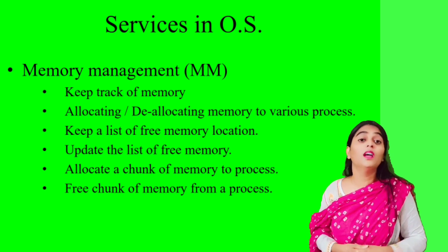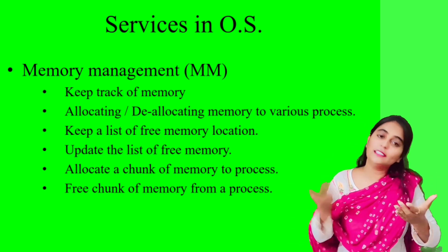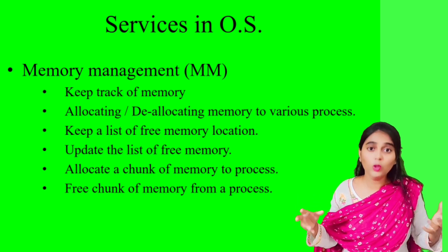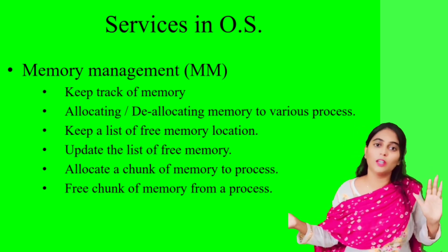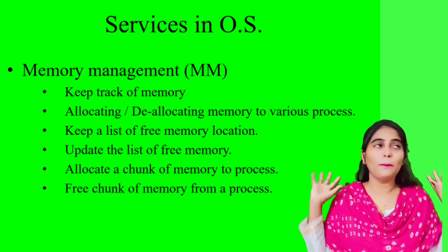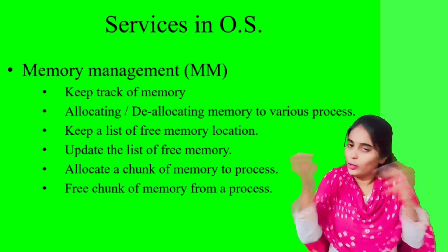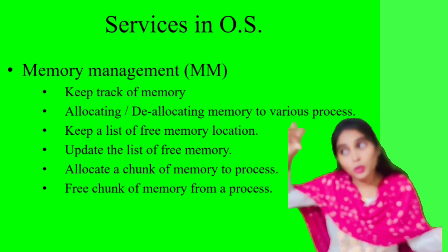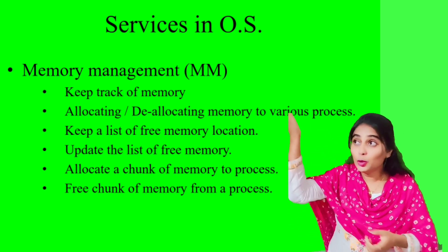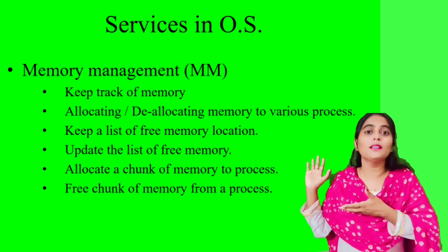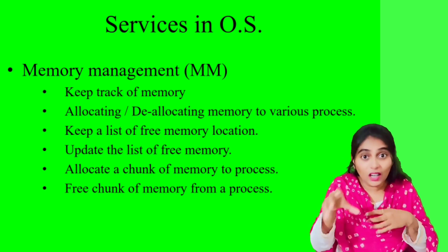The last service is memory management. Any program or task is written into memory. The operating system manages this memory for you. For example, if you have two numbers — say 2 and 4 — and you want to swap them, you need a temporary memory space. The operating system provides and allocates that chunk of memory. A chunk is a small part of memory. The OS keeps track of which memory is free and allocates it as needed.